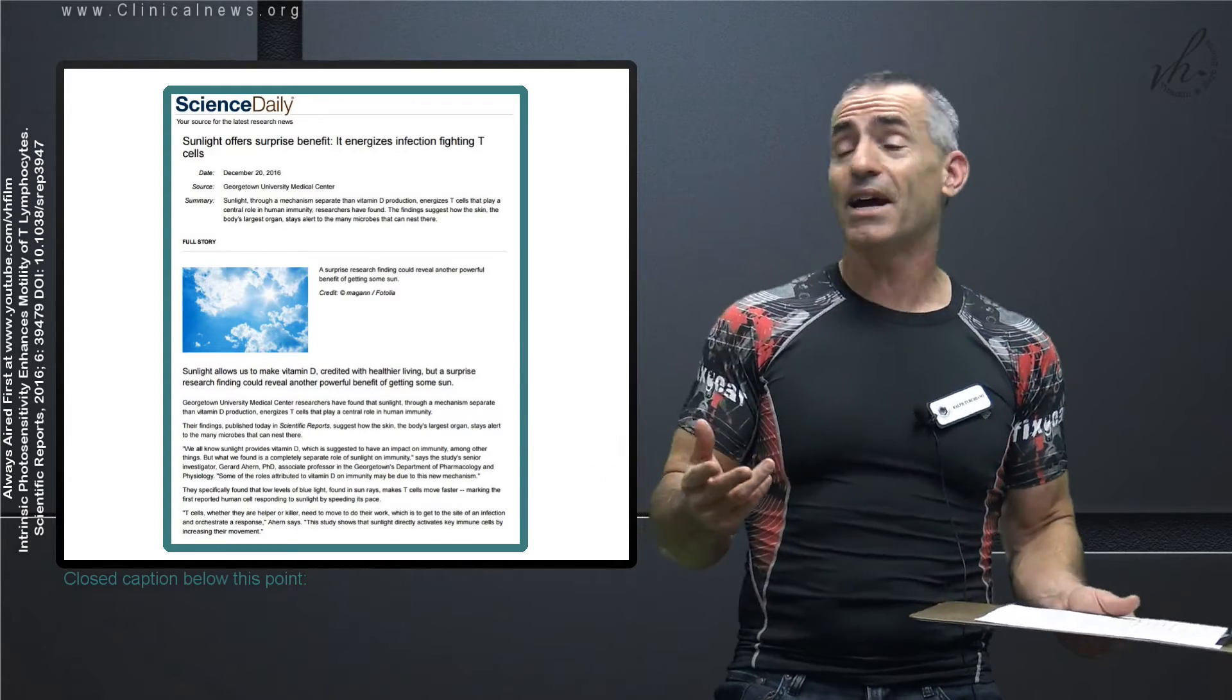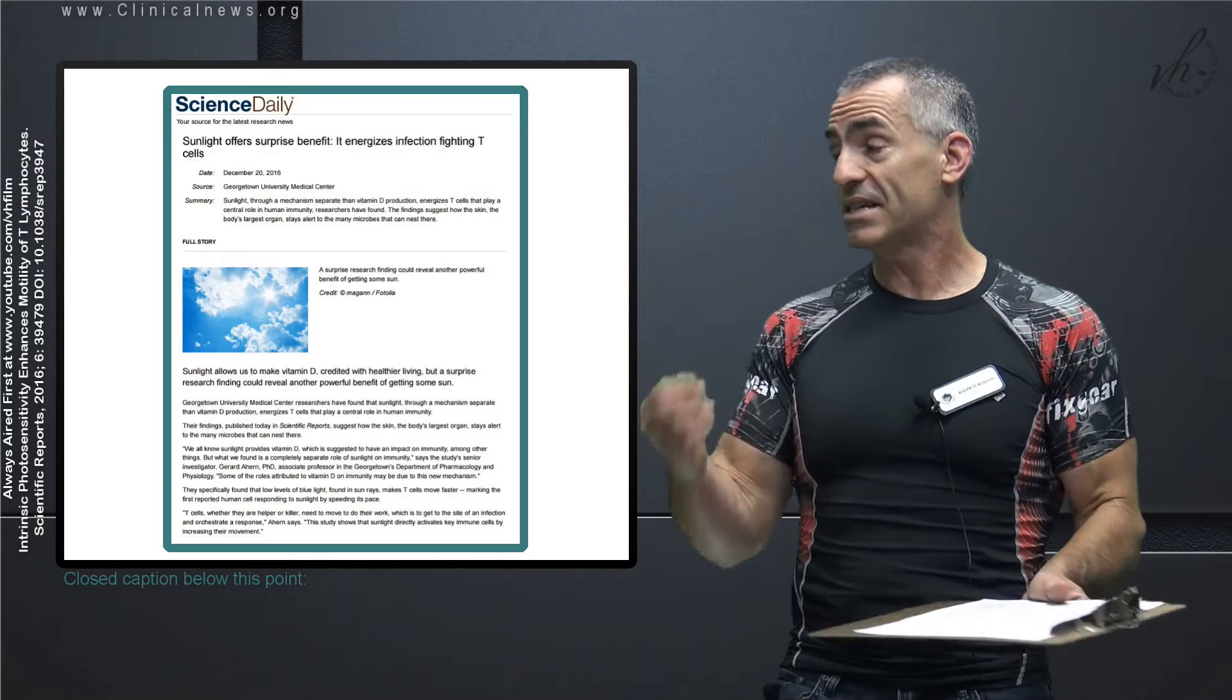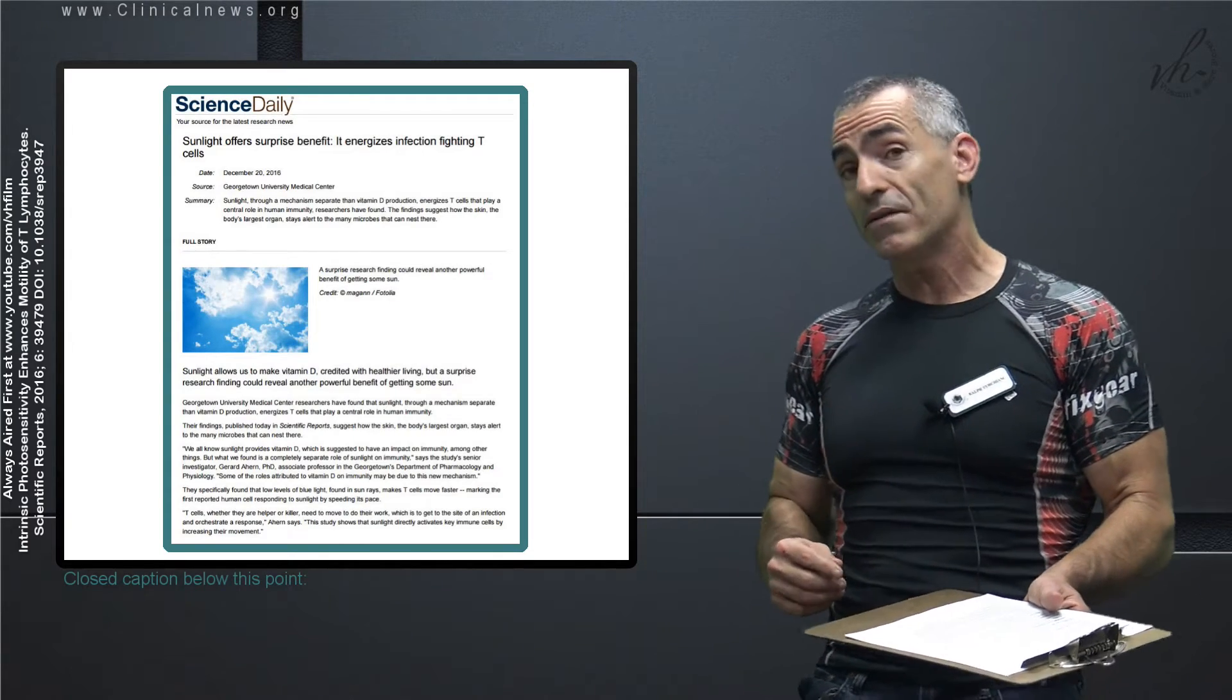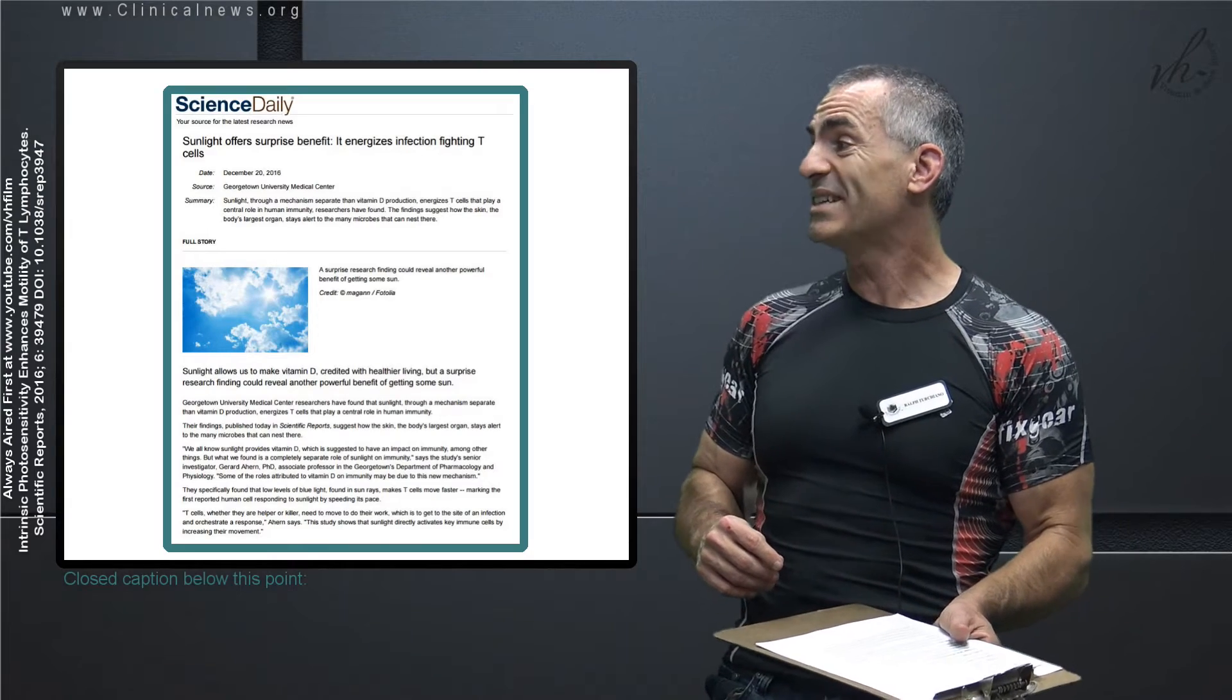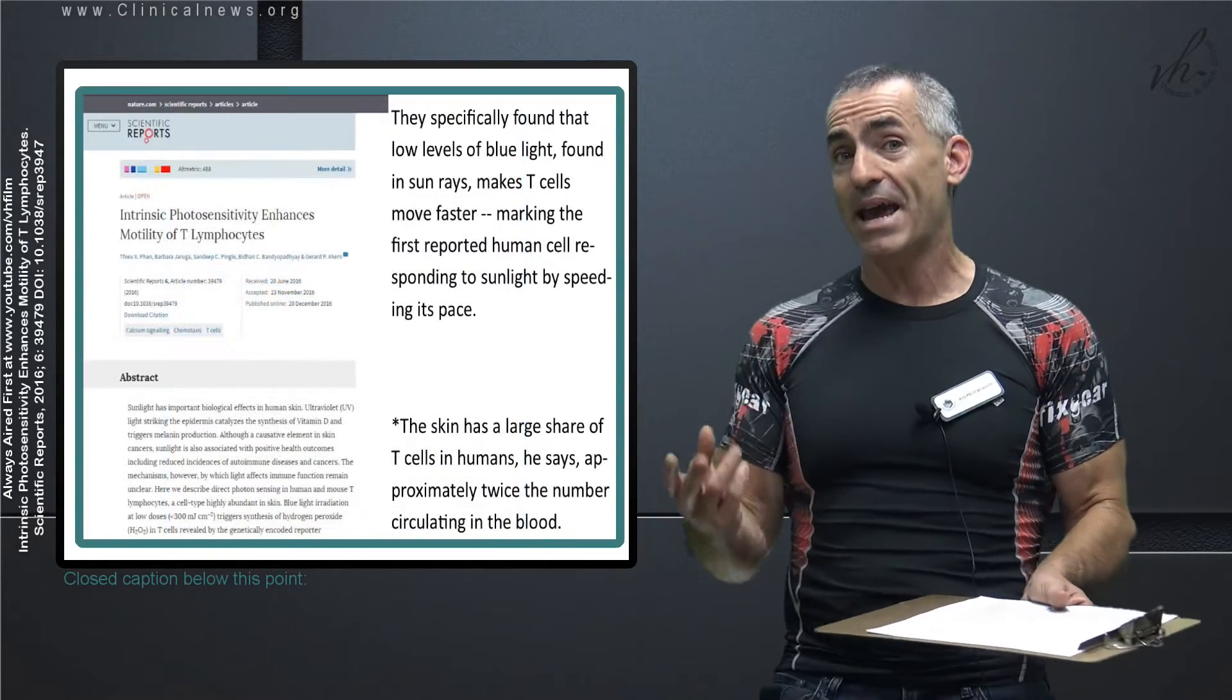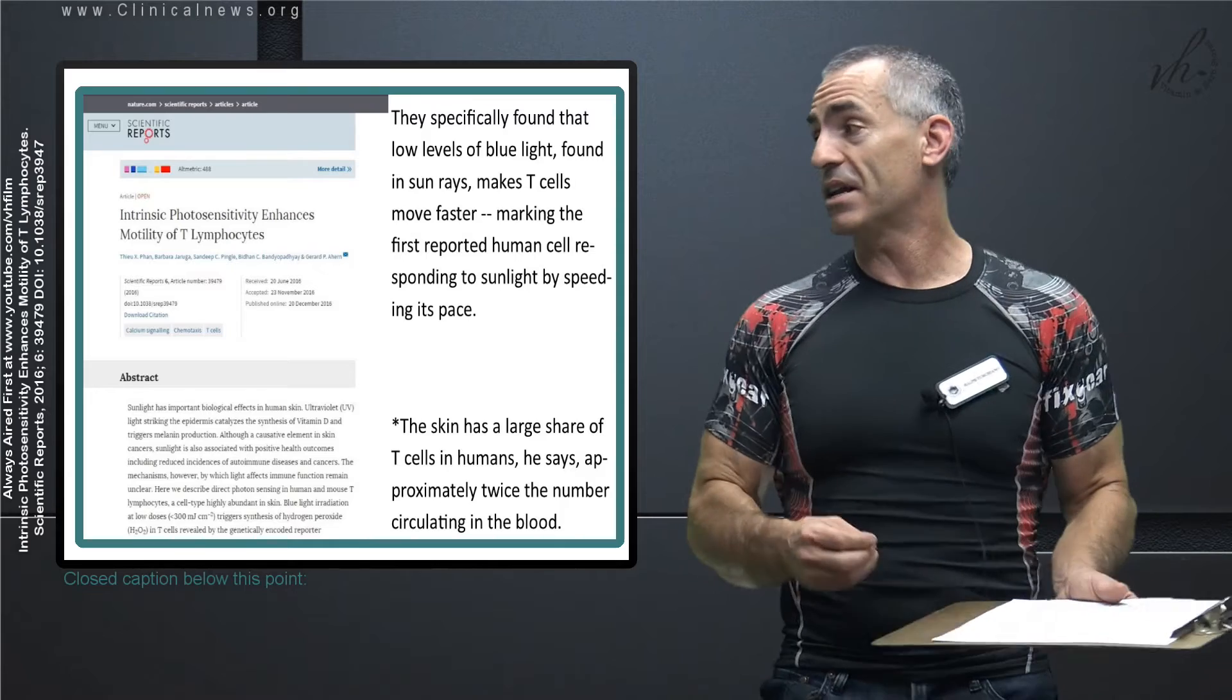Basically, the publication title is as follows: Sunlight Offers Surprise Benefit. It energizes infection fighting T cells. Researchers claim as follows: they specifically found that low levels of blue light, doesn't have to be high, found in sun rays make T cells move faster, marking the first reported human cell responding to sunlight by speeding its pace. So it's not exactly creating T cells, it's making T cells much more active and better at fighting infection.